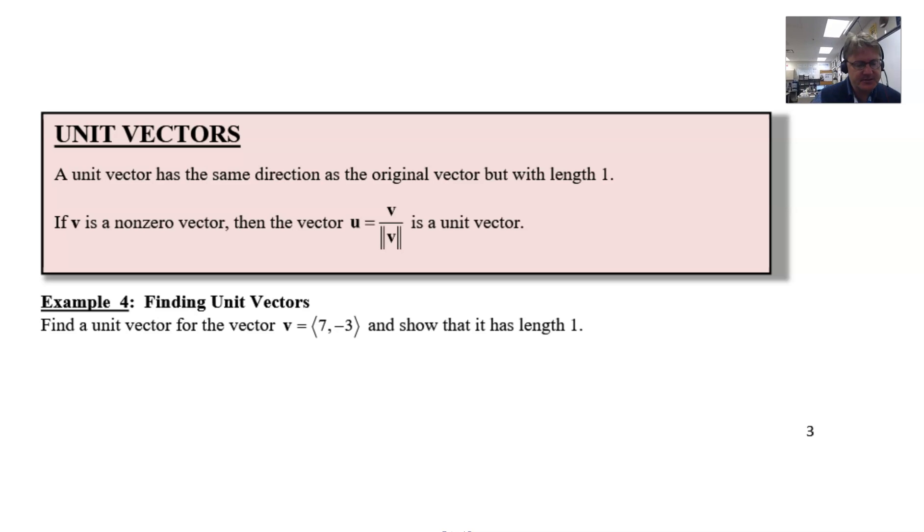It's pretty cool. So in our example 4, we see that we're going to find a unit vector for the vector v, which is 7, negative 3, and we want to show that it has a length of 1.